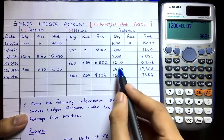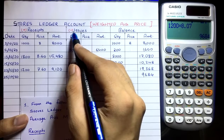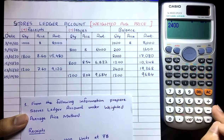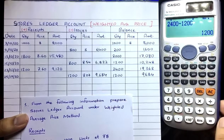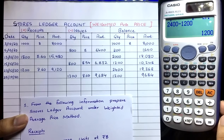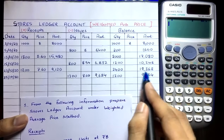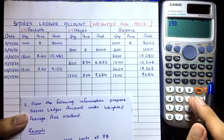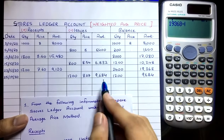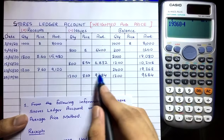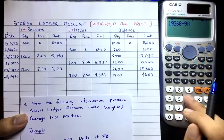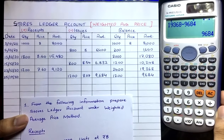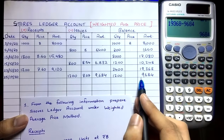Update the balance: 2,400 − 1,200 = 1,200 quantity remaining. Cost: ₹19,368 − ₹9,684 = ₹9,684. Final balance is 1,200 quantity costing ₹9,684.